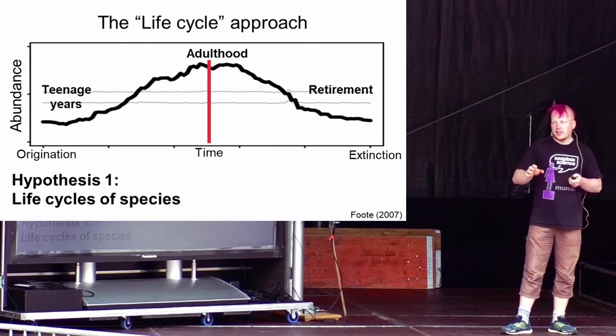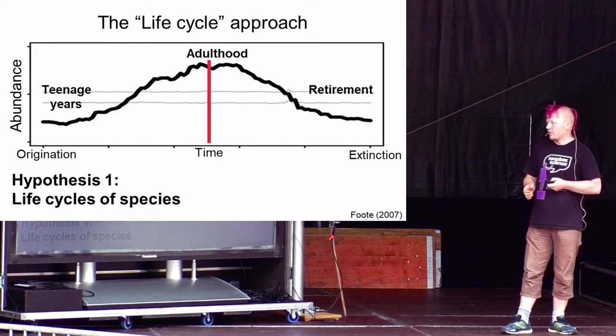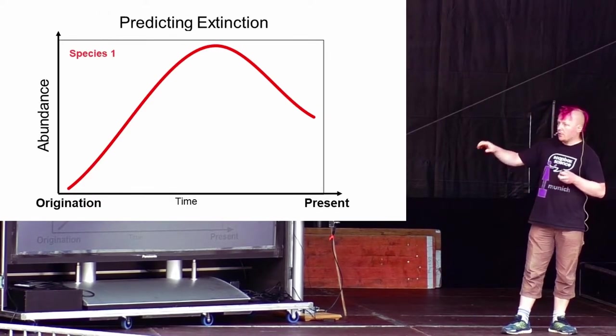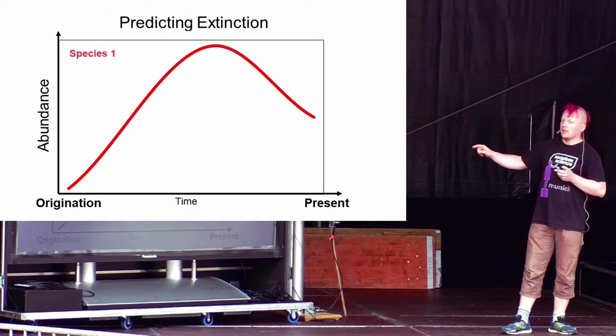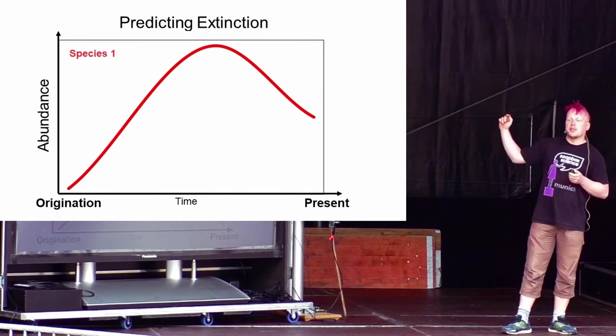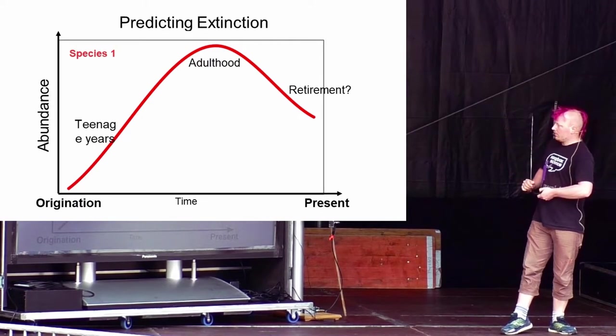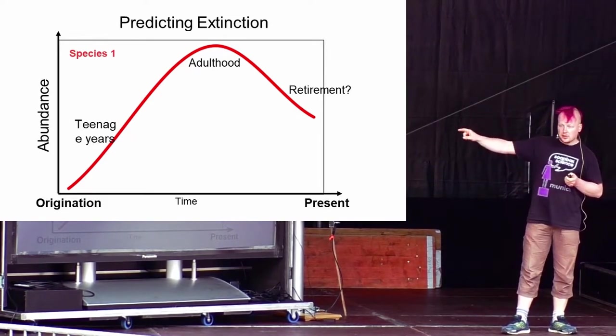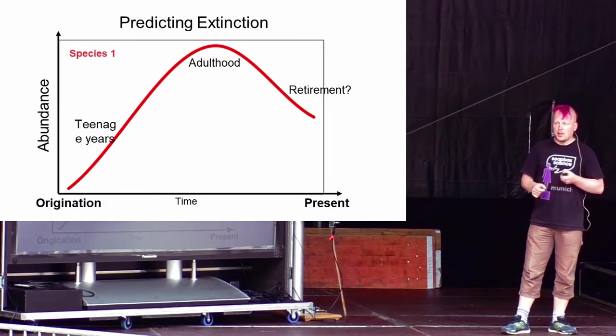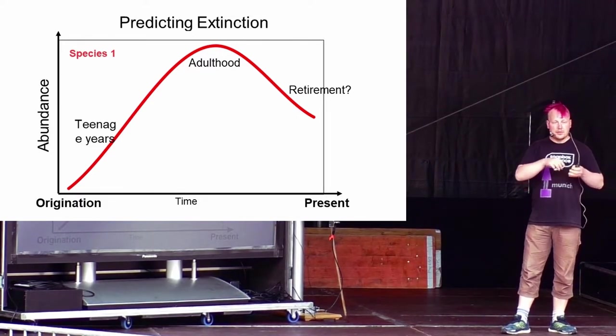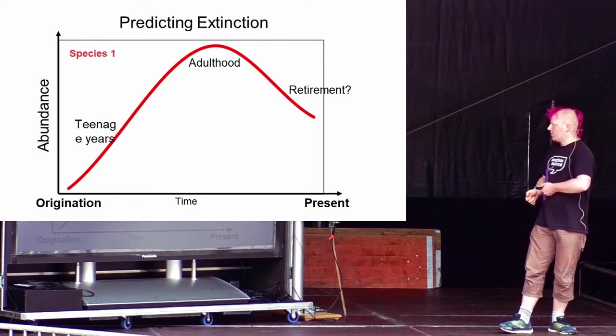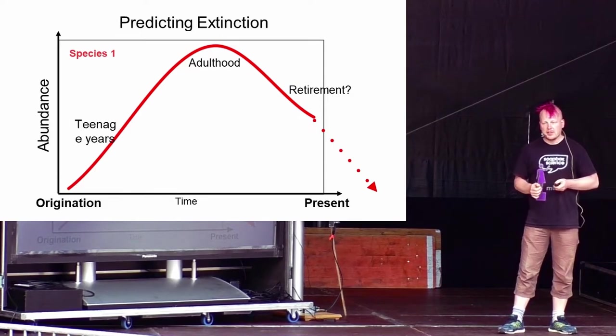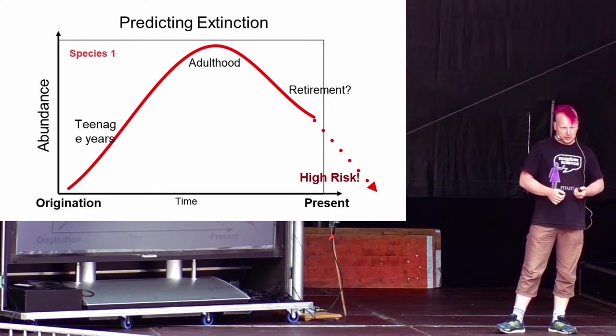Using this pattern to predict extinction risk is pretty straightforward. As an example, here is a curve of a species that still lives, so it is still around in the present, and we trace how common it was in the past. We see it has had its teenage years, it has had its adulthood, and it is slowly approaching retirement. With the knowledge of that common pattern of the life cycle, we can then predict it will most likely go extinct in the near future, so it has a high extinction risk.